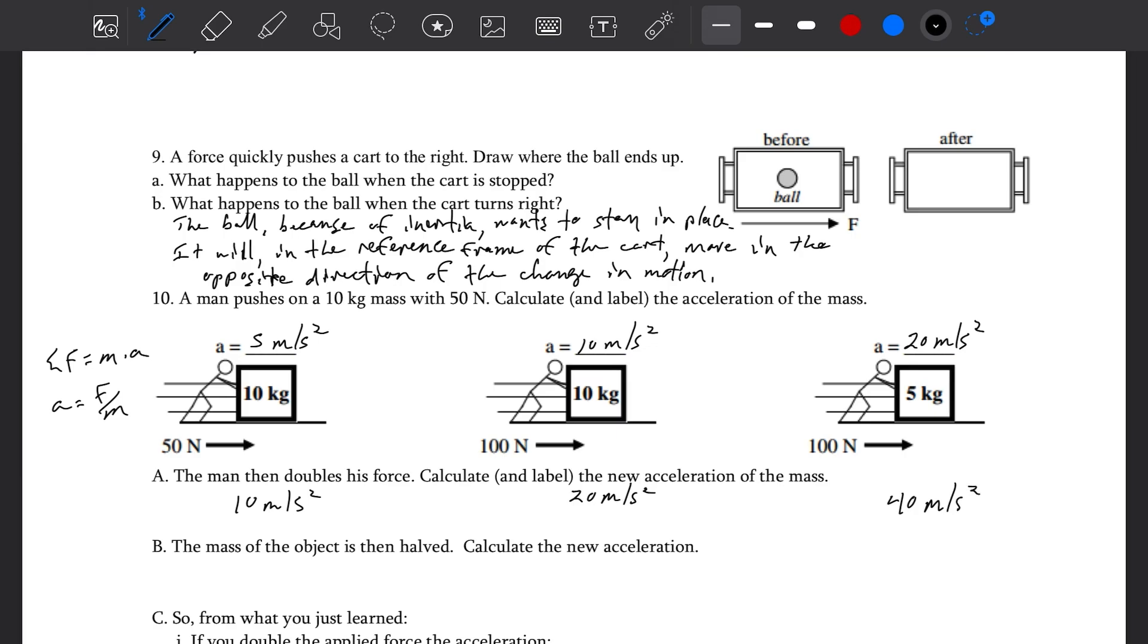The mass of the object is then halved. Calculate the new acceleration. Look back at the relationship. If mass goes up, it's in the denominator. If mass goes up, acceleration goes down. But here it's the flipped. Mass is going down, so acceleration is going to go up. If you half the mass, the acceleration is going to double. 10 to 20, 20 to 40, 40 to 80.